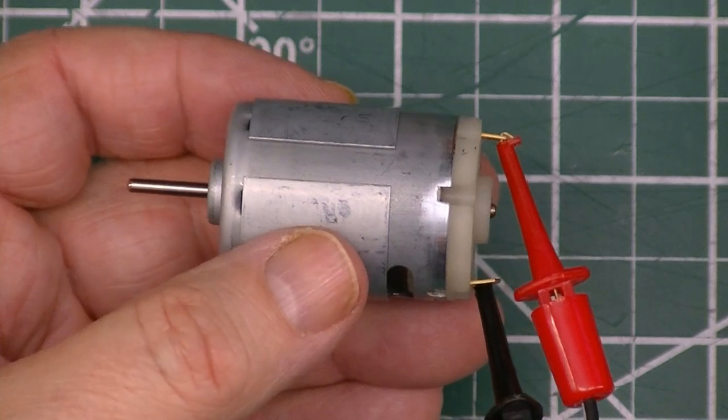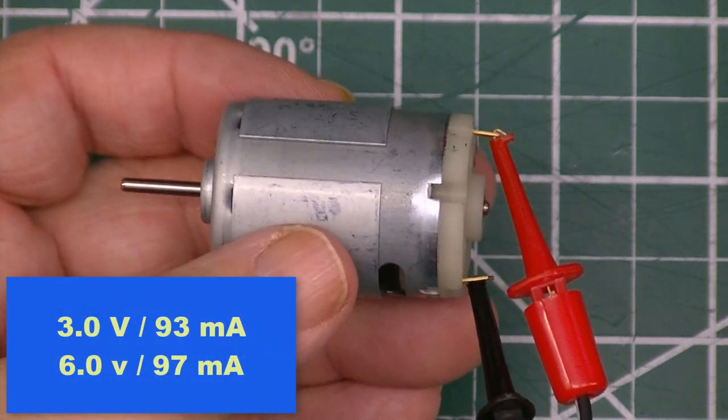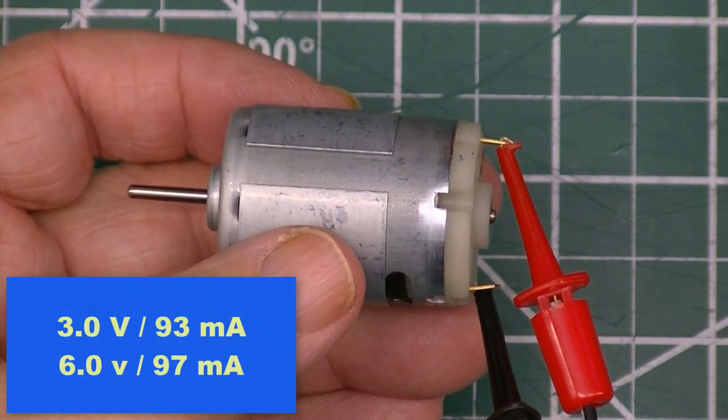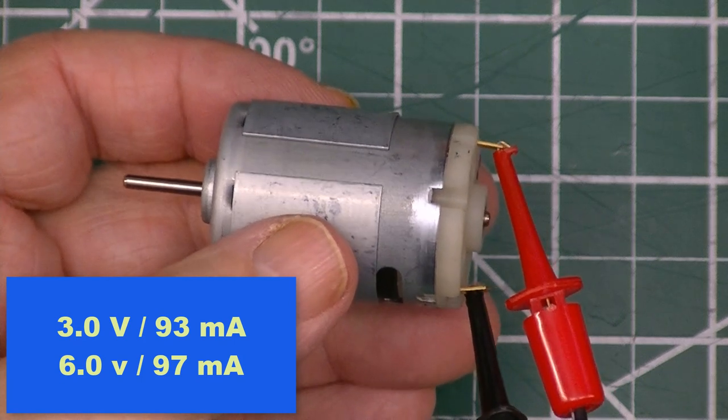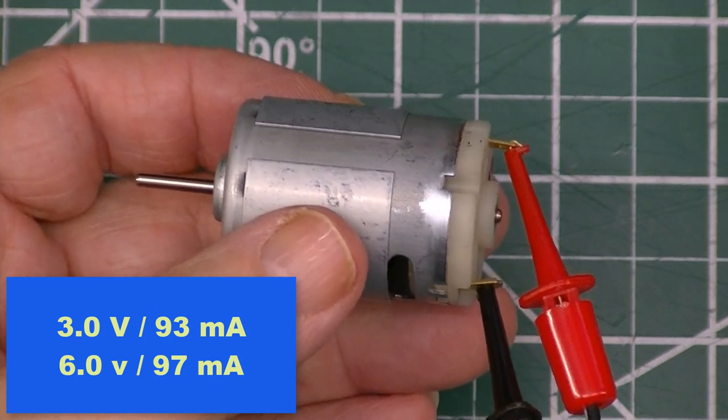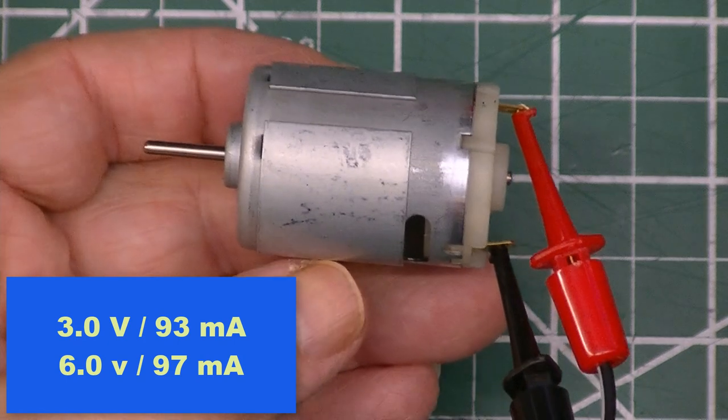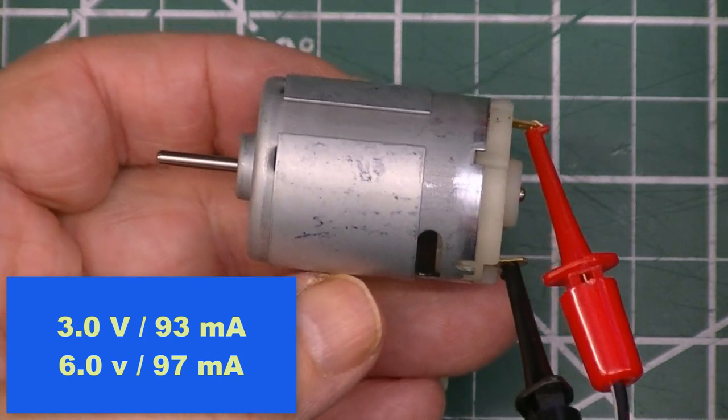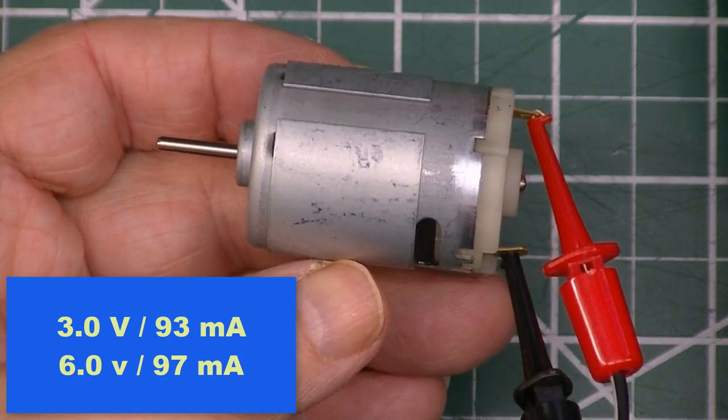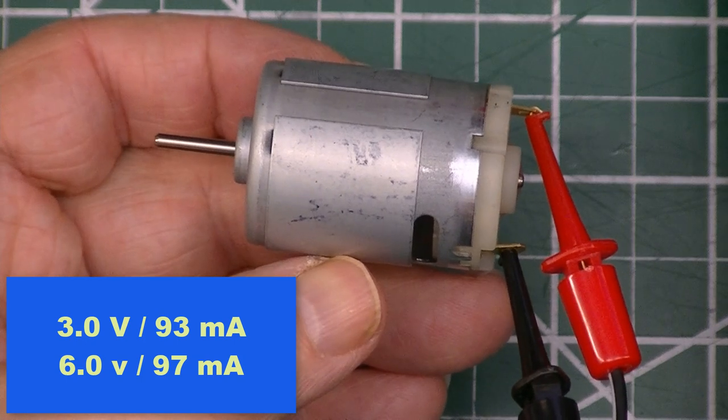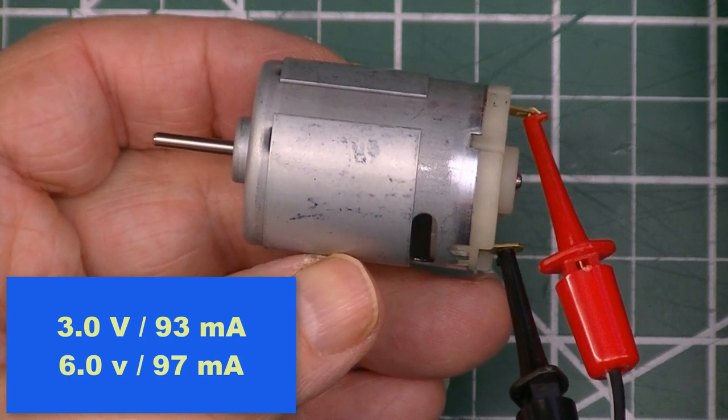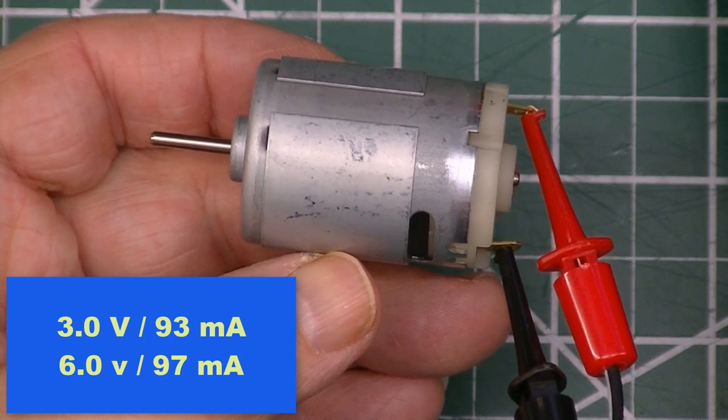This is the R385 motor which can be driven at 6 volts. I'm driving it at 3 volts right now and it's taking 93 milliamps. I'm going to push it up a little bit. And that's 6 volts, drawing 97 milliamps at 6 volts.